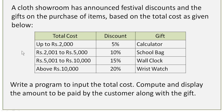The first row: if the total cost is up to 2000, the discount percentage is 5% and the gift you are going to get is a calculator. If the total cost is between 2001 and 5000, then the discount percentage is 10% and the gift is a pullback.